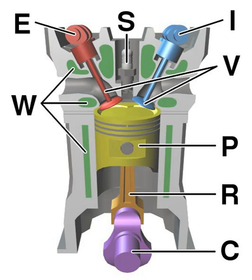A reciprocating engine, also often known as a piston engine, is typically a heat engine that uses one or more reciprocating pistons to convert pressure into a rotating motion. This article describes the common features of all types.